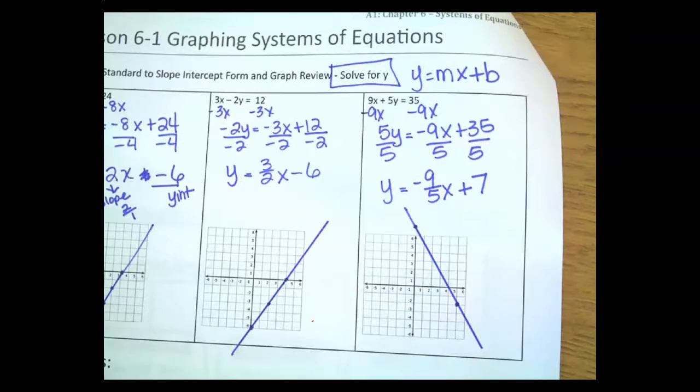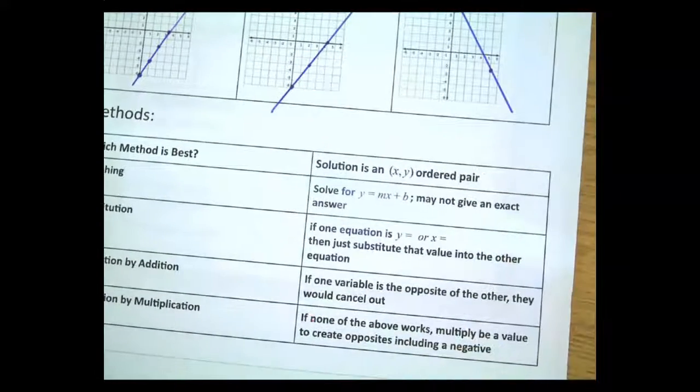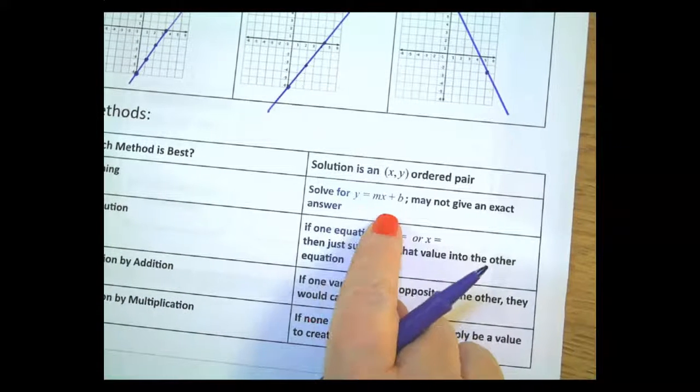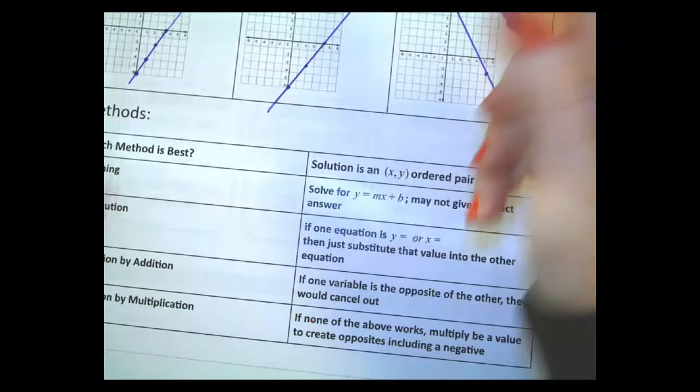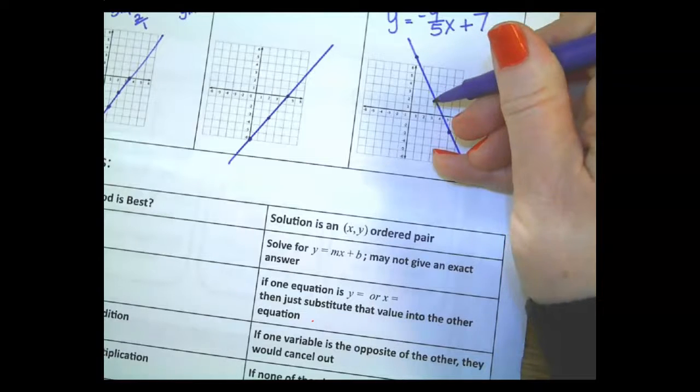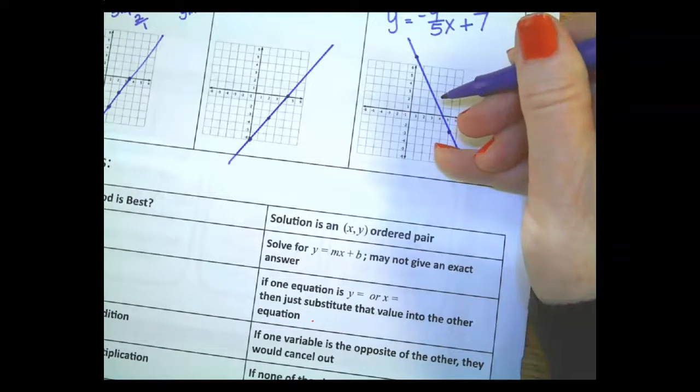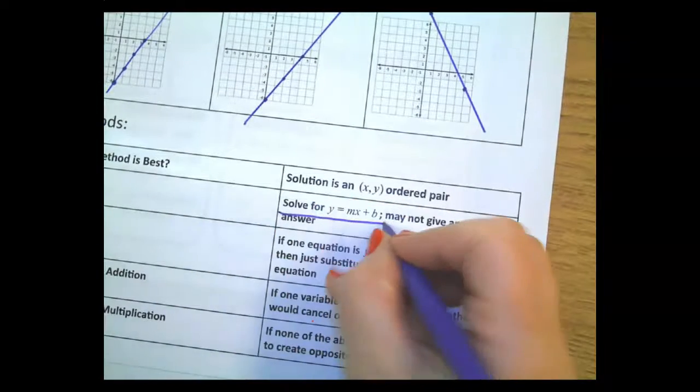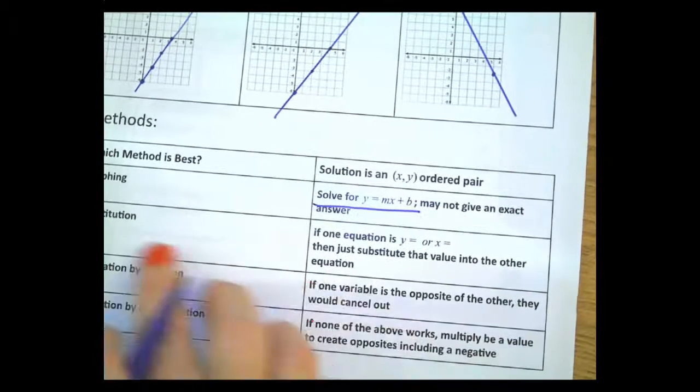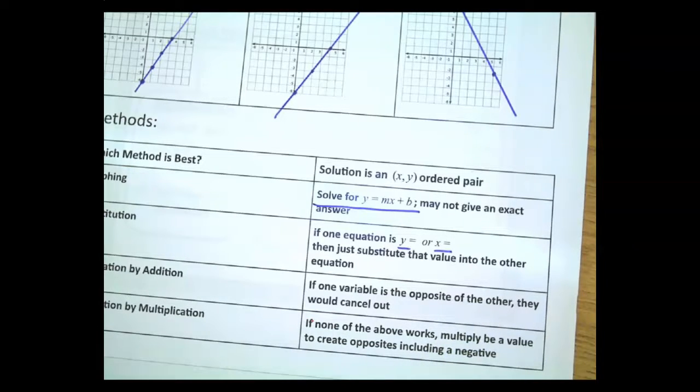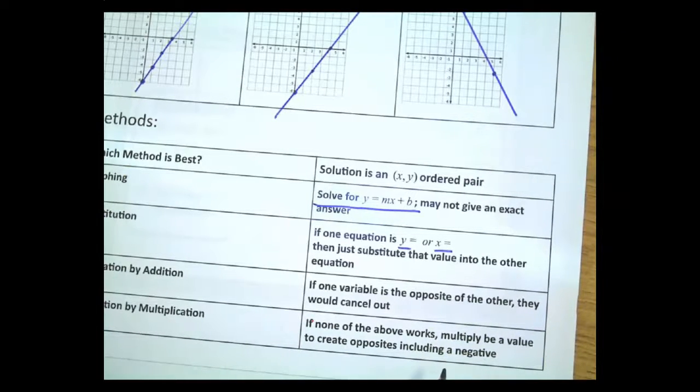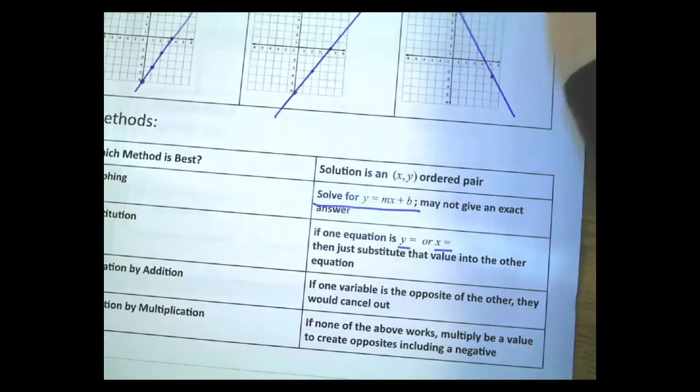Okay. So let's go over which method is best. When you're graphing, solve for Y may not give an exact answer. So what they're saying is here you don't really know what these values are like this in-between spot. You don't know what that is and sometimes that makes it hard. Make sure it looks like that so graphing would be good. We'll use substitution. If you have something that is just equal to those two, then we'll just substitute those values in. Elimination. If one variable is the opposite of the other, you can cancel them out. And then if none of the above works, we can multiply to create opposites. So that's where we're going next.